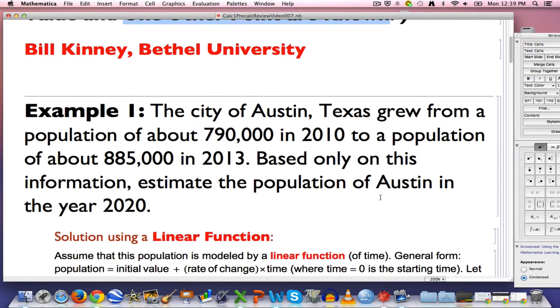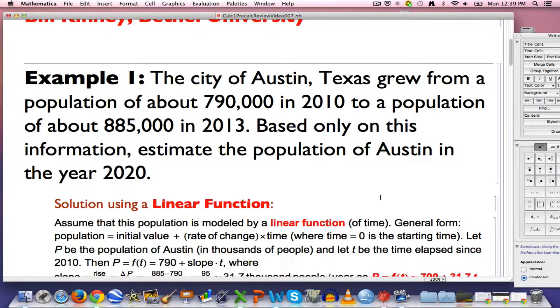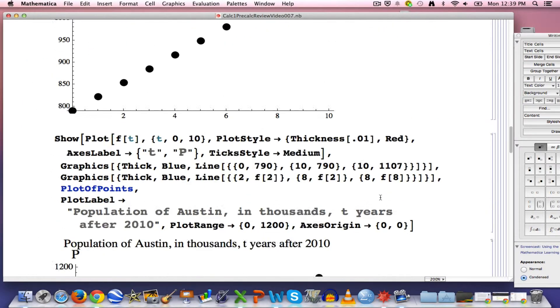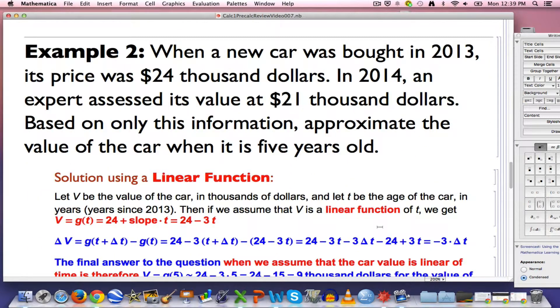Our two situations are thinking about the population of Austin, Texas as a function of time, where t equals 0 stands for the year 2010, and also thinking about the depreciation in value of a car, with time equals 0 being 2013. I'm going to focus at the beginning of this video on the car example because the fact that I'm thinking about the price going from one year to the next, from 2013 to 2014, is going to make the calculations a little simpler.